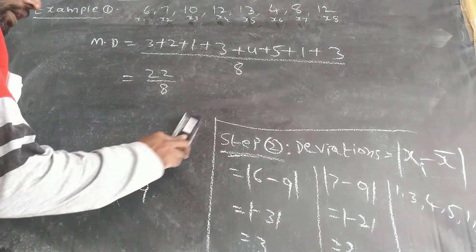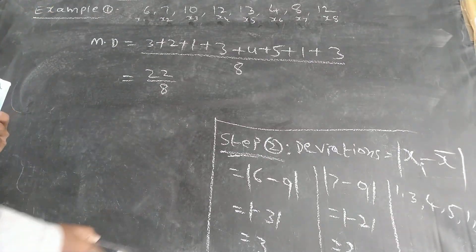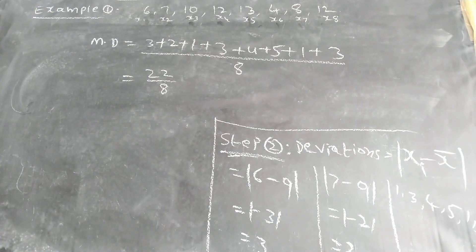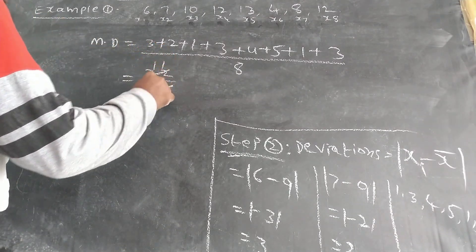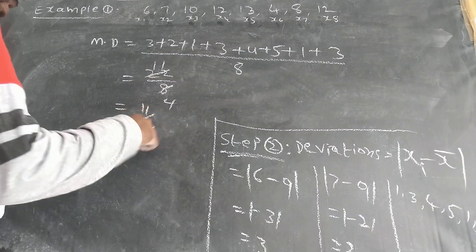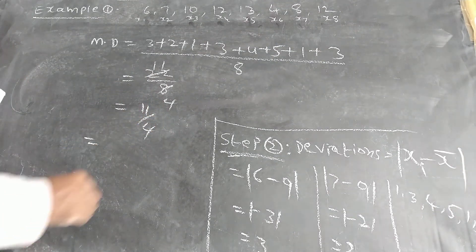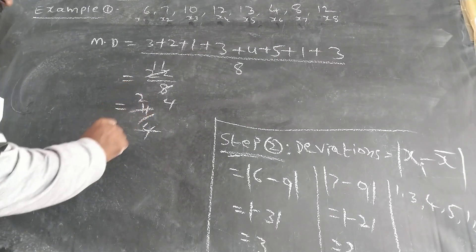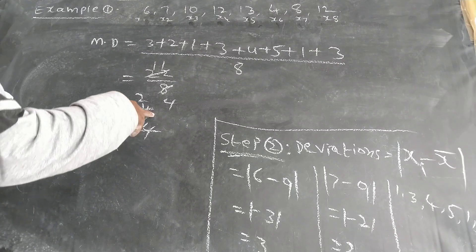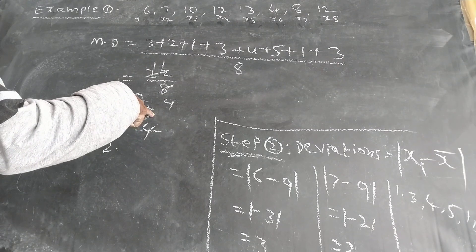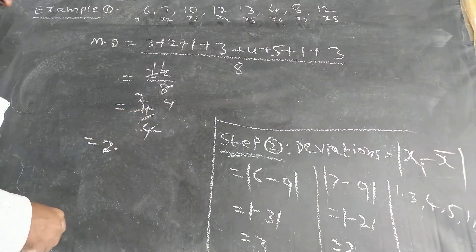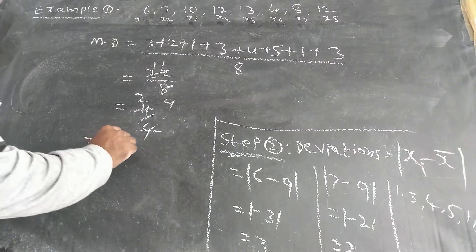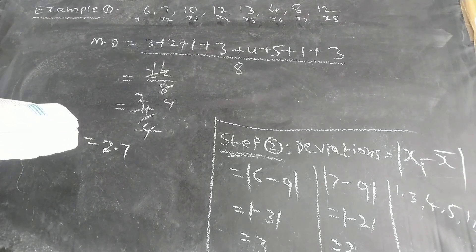22 by 8. So 8 table: 8 times 1 is 8, that's 11 by 4. 11 by 4. Approximately what you can write? 4 times 2 is 8. So remainder 3. 3 means 30. So 2 point... 30 means 4 times 7. Approximately value you can write.